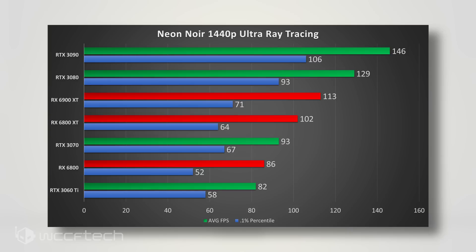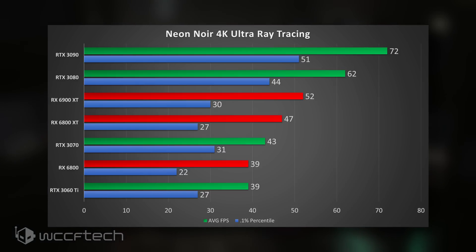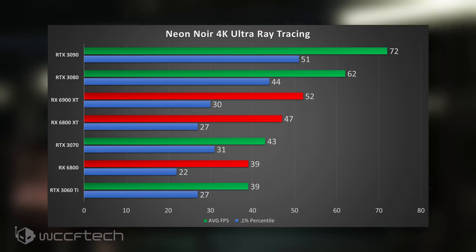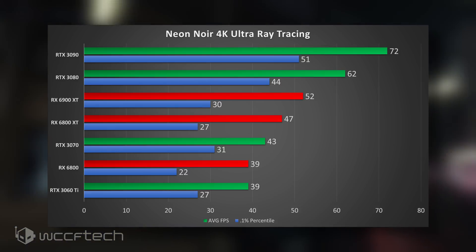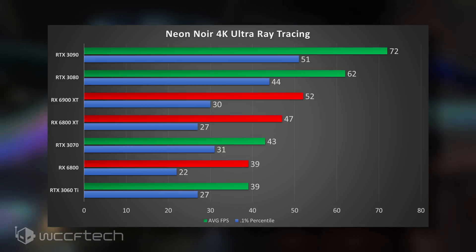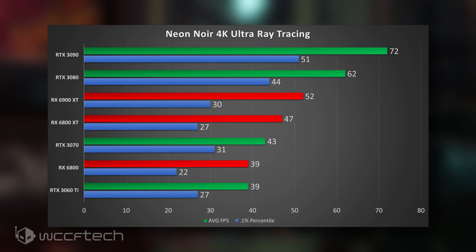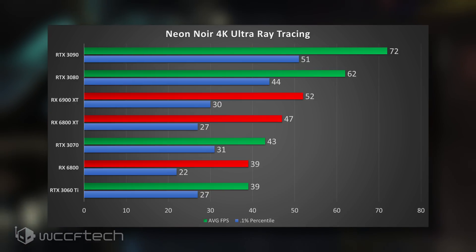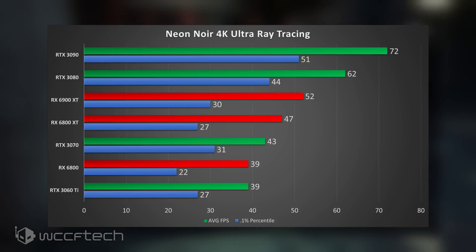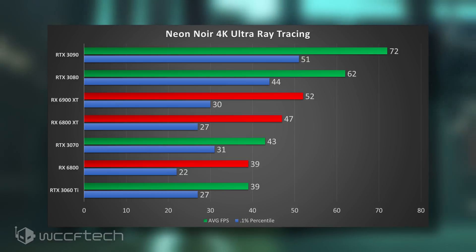Moving into 4K full UHD, the only card that's going to break 60 FPS is the 3080. The 6900 XT is about 10 FPS behind it and 14 FPS behind on the 1% percentile. The RTX 3090 pulls a considerable margin ahead of the 3080. The 6800 is now matched by the 3060 Ti, with even better 1% percentiles. Neither would give you a good experience at 4K — the 3060 Ti is not a 4K card, and even the 3070 has better 1% percentiles than the 6900 XT at 4K.